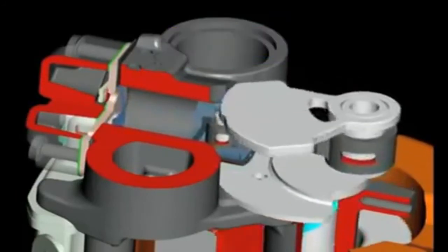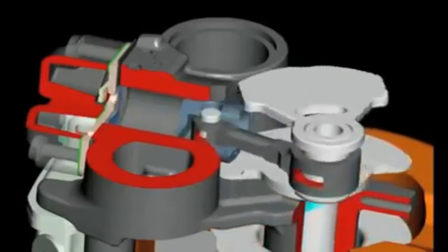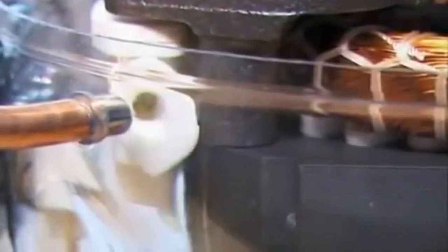Thus, the compressed refrigerant moves into the discharge chambers of the block. The muffler forms a connection between the suction connector of the shell and the suction side of the pump unit and it is its task to minimize the suction noise.